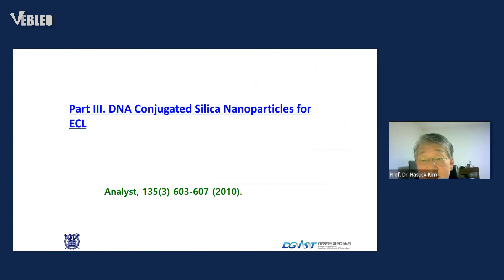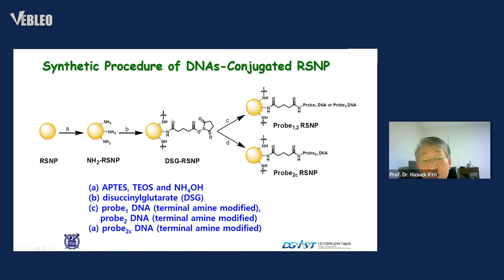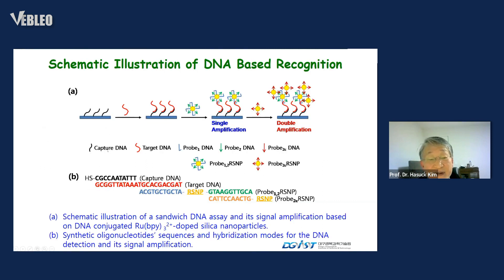A third example is DNA-conjugated silica nanoparticles for ECL. This time, instead of utilizing antigen-antibody interaction, we utilize DNA hydrogen bonding — DNA hybridization. We use ruthenium BP containing nanoparticles, surface-modified with amine functionality. This amine functionality can have additional interaction to form probe DNAs — probe one, probe two. We continue this to form more dendrite-like structures from one nanoparticle to another, producing surface-multiplied nanoparticles.